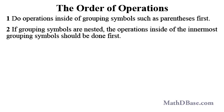2. If grouping symbols are nested, the operations inside of the innermost grouping symbols should be done first. If we want to evaluate the single layer nested expression that we saw earlier, first we simplify 3 minus 9 to get negative 6.